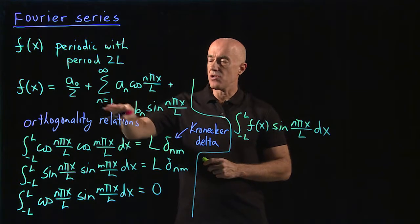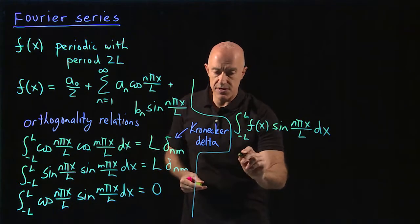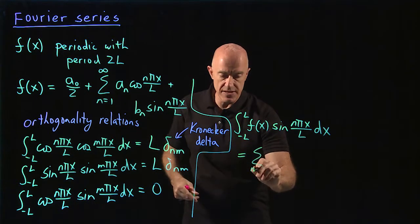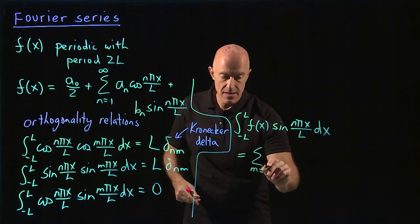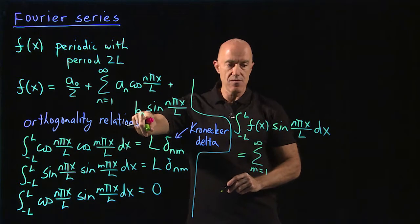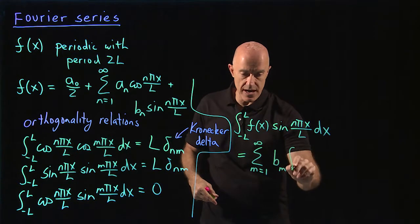So the only thing we would have left is this last term. So this would be equal to the sum, and then I'm changing the n there to m. So m equals 1 to infinity. And then we would have a b sub m. And then we integrated.